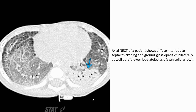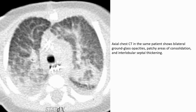Non-contrast, non-enhanced CT of a patient shows diffuse interlobular septal thickening and ground-glass opacity bilaterally, as well as left lobe atelectasis. Another CT in a patient shows bilateral ground-glass opacity, patchy areas of consolidation, and interlobular septal thickening.